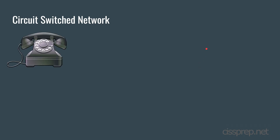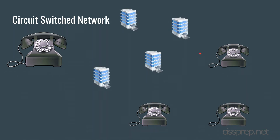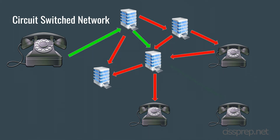Before we get started on the main topics, here's a quick overview of circuit switching. If you're familiar with the plain old analog telephone system, or the plain old telephone system, a connection is basically established before the two ends can communicate. The connection is made by dedicated copper wires which are then connected based on where the call is going. Nothing else can use these wires for the duration of the call.